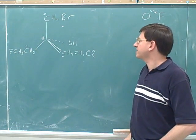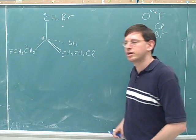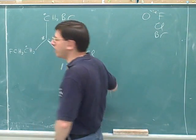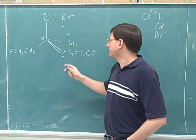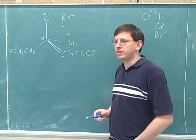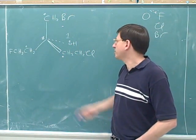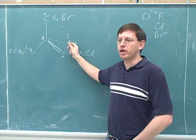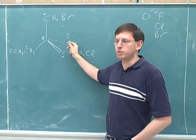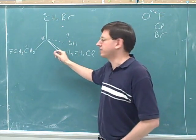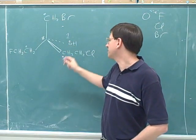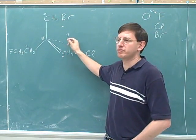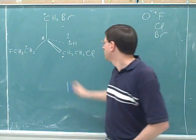Now, just by looking at this, do we know any priorities? Oxygen. We know the oxygen is number one. We should make a list of the three things that things are attached to, but we don't make a list for oxygen, because the oxygen is already number one. We only make a list for the things that are tied. So we only need to make a list for the carbons. We don't need a list of the three things the oxygen is attached to because we already know it's number one.